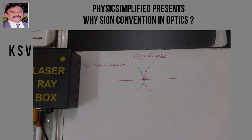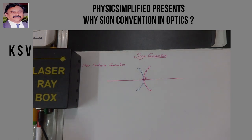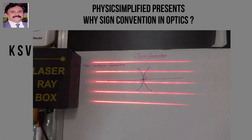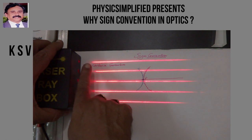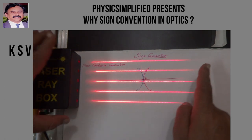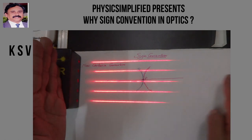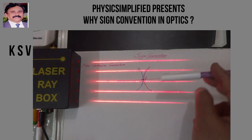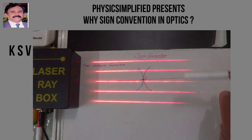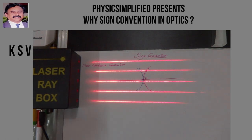The measurements that are taken in the direction of incident light are always positive. For example, in this case the light is moving from left to right. So in this direction, whatever measurements I take, all are to be considered as positive.